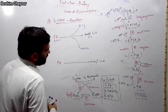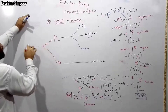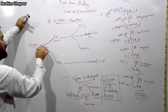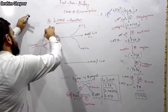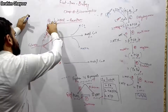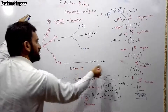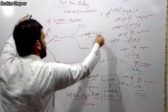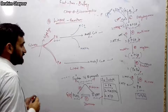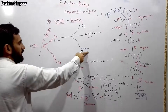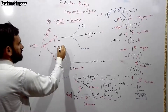Acetyl-CoA enters the Krebs cycle (citric acid cycle). This is the link reaction connecting glycolysis to the Krebs cycle. The enzyme complex involved is the pyruvate dehydrogenase complex, which is a multi-enzyme complex.